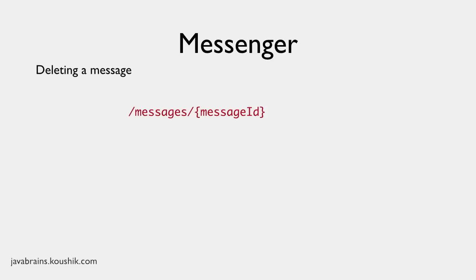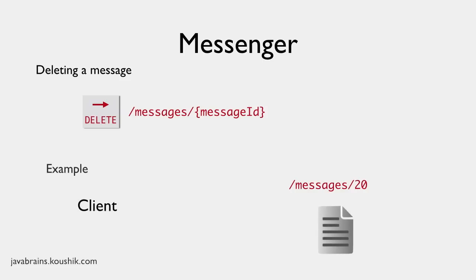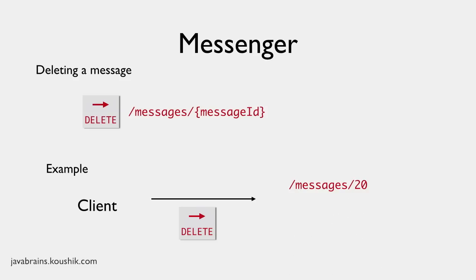Now let's look at deleting a message — this one should be easy. There is a DELETE method, and that's what you need to use here. When you want clients to delete a particular resource, have them issue a DELETE request to that resource URI. No request body is required since you're not sending any new content. So a DELETE request for /messages/20 deletes message ID 20.